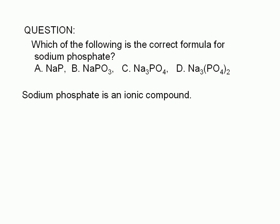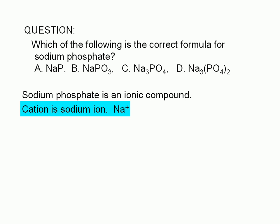In this case, we know that the cation of the compound is the sodium ion. The first part of the name of any ionic compound is the name of the cation. We should know that the sodium ion has a charge of plus 1 based on its location in the periodic table, since it belongs to group 1A.